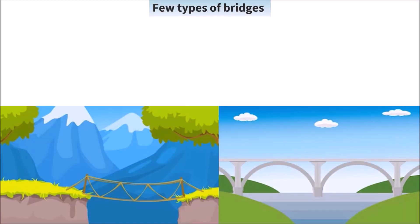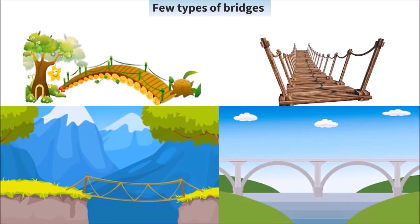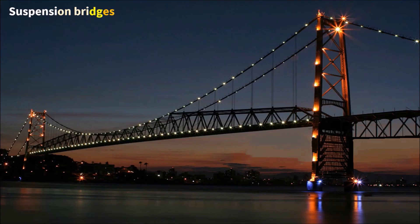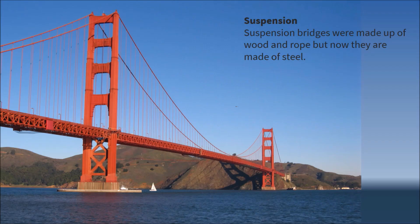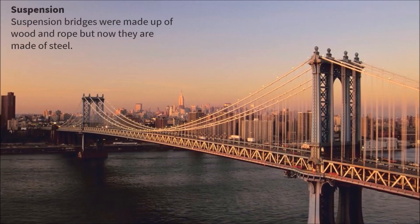Let us see a few types of bridges. Suspension bridge — it can cover a long distance. The earlier suspension bridges were made up of wood and rope, but now they are made of steel.